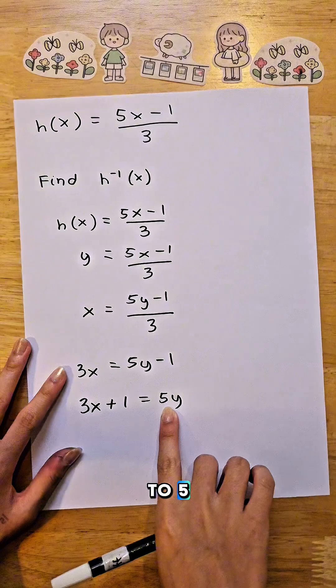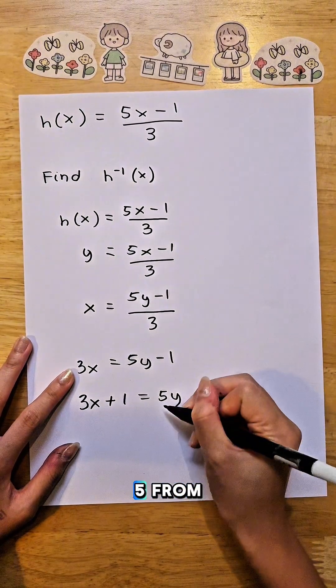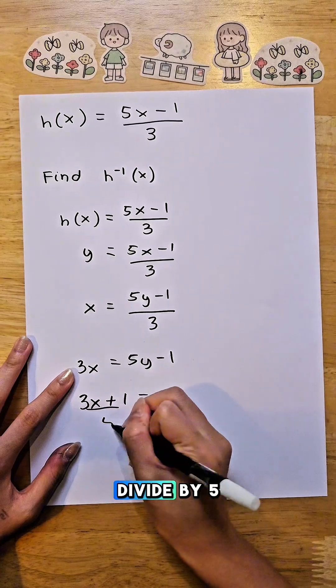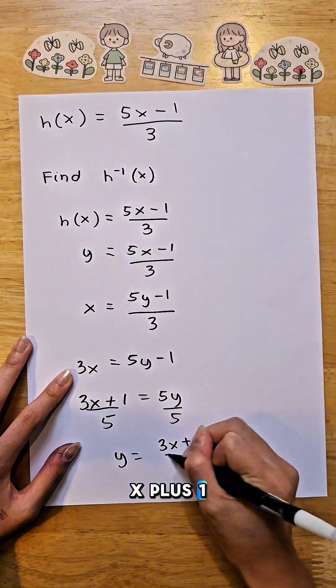Now we don't need the 5, so we can just divide by 5. If we divide by 5 on one side, we need to divide by 5 on the other side too. So divide by 5, divide by 5. So y = (3x + 1)/5.